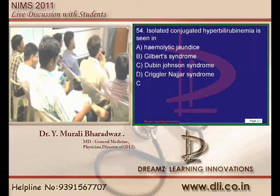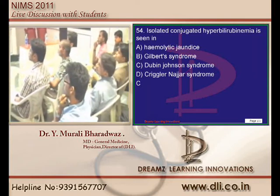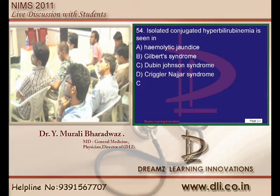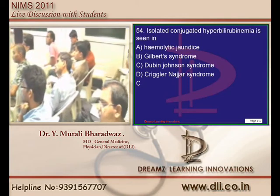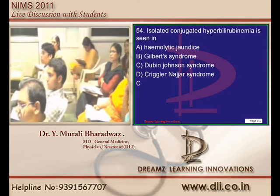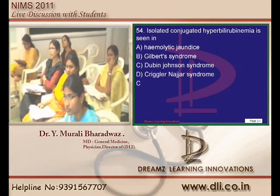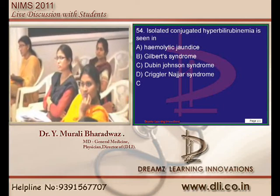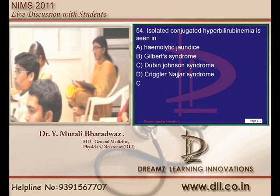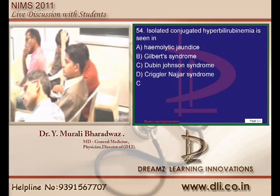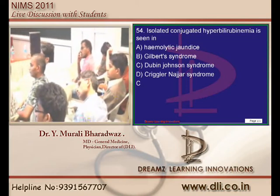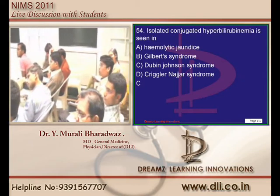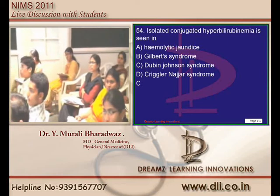Conjugated hyperbilirubinemia is found in Dubin-Johnson syndrome. Unconjugated hyperbilirubinemia is found in Crigler-Najjar type 1 and type 2. Gilbert syndrome presents with unconjugated hyperbilirubinemia. What is special about Gilbert syndrome? No other liver enzymes are elevated - alkaline phosphatase, SGOT, SGPT are all normal. Only isolated hyperbilirubinemia occurs in someone with a history of fever, exercise, or stress, and it is self-limiting. Whenever someone comes with jaundice without any other enzyme elevation, think of Gilbert syndrome and inform the patient of a good prognosis.